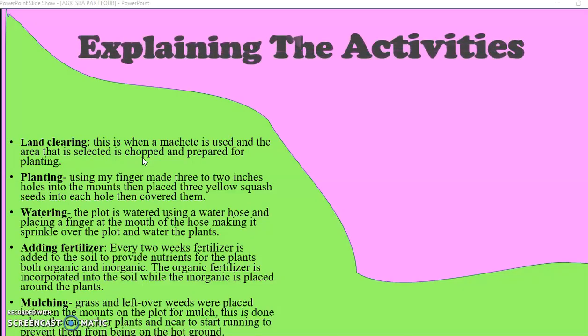Then you're going to be explaining your activities, and for here you're going to explain how you have cleared the land, how you have planted the crops, how you have carried out the watering, how you have added the fertilizer. What method of fertilizer application did you use? What are the types of fertilizer? How did you fertilize the crop? How did you mulch? Did you use grass or plastic? What did you do?